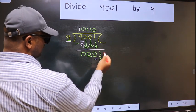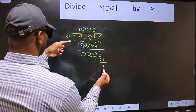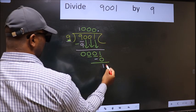Over here we did not bring any number down. And 1 is smaller than 9. So now we can put dot and take 0.